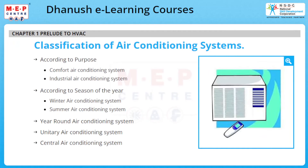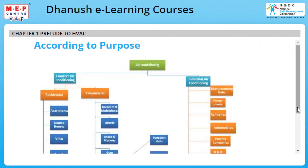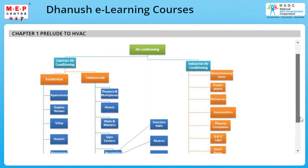Air conditioning systems are classified according to purpose — comfort air conditioning system and industrial air conditioning system — and according to season of the year: winter air conditioning system, summer air conditioning system, and year-round air conditioning system. They are also classified as unitary and central air conditioning systems. According to purpose, comfort air conditioning includes refrigeration in residential and commercial buildings, while industrial air conditioning includes refrigeration in industries.